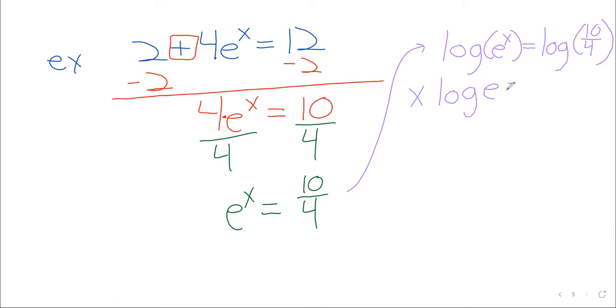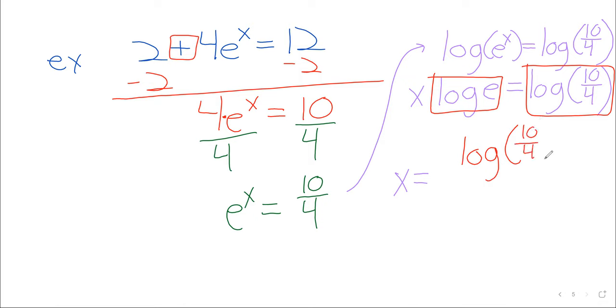The x comes down in front of the log. And x then, again, don't get thrown or intimidated. Logarithms of numbers are just numbers. x times a number equals another number. So we just need a bit of division to get x by itself.